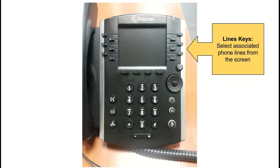Up here we have our line keys. These are used when looking at contacts, directories, or your favorites, and they're associated with the phone lines on the screen. So if you tap that button you'll be able to interact with the phone line that you have highlighted.